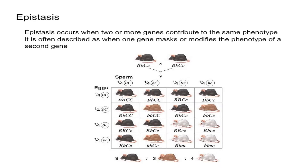If you have a homozygous recessive genotype for C — so two lowercase c's — you're going to get a white mouse because you can't even produce a coat color. So it doesn't matter what gene the mouse would have had or what color it should have been; if it doesn't produce the color at all, you get white.